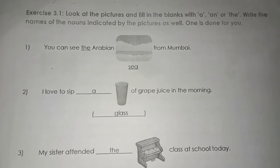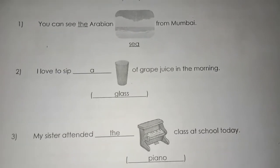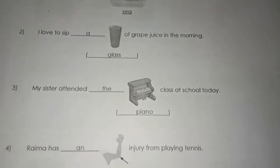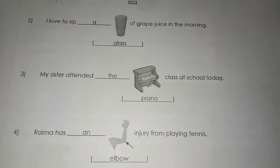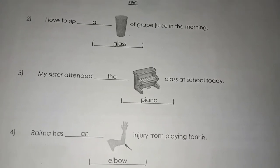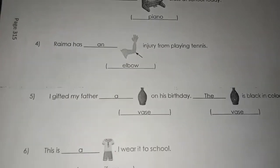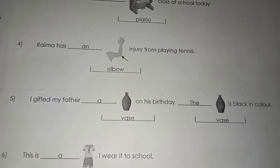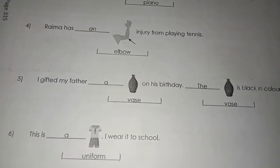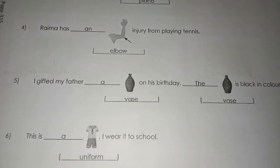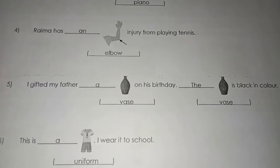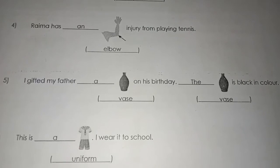You can see the Arabian Sea from Mumbai. I love to sip a glass of grape juice in the morning. My sister attended the piano classes at school today. Rima has an elbow injury from playing tennis. I gifted my father a vase on his birthday. The vase is black in color. This is a uniform — I wear it to school. Children, here 'uniform' starts with 'u' but it is pronounced 'uniform', which is a consonant sound, so we write 'a uniform'.